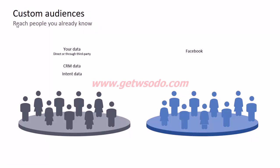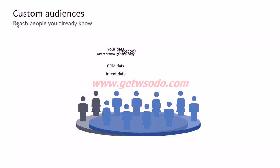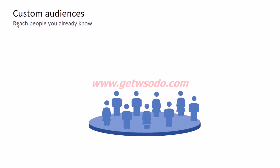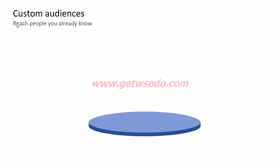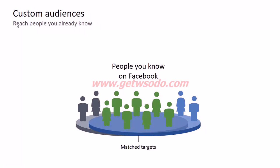Custom audiences allow you to target people that you already know. On one side you have people on Facebook, and on the other you have your own data — CRM data, email IDs, website traffic. Custom audiences enable you to reach the overlap between the people you already know and the people who are on Facebook. That is the whole idea behind custom audiences.